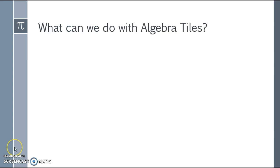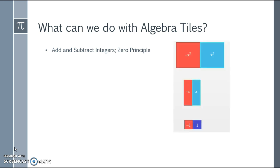So what can we do with these algebra tiles? We can do all kinds of things. We can add and subtract integers leading us to the zero principle. If I have a negative x squared and a positive x squared, those two cancel out to zero. A negative x and a positive x cancel out to zero, and a negative one and a positive one cancel out to zero.